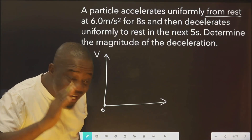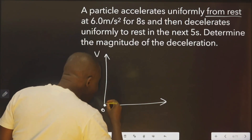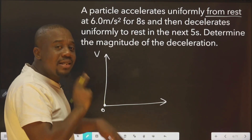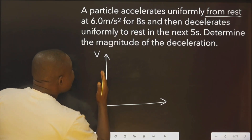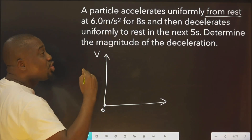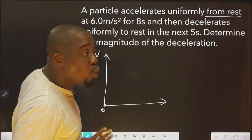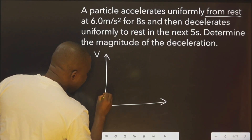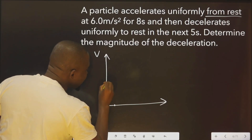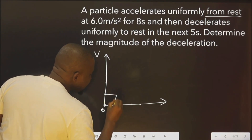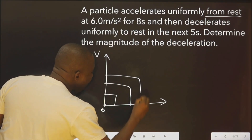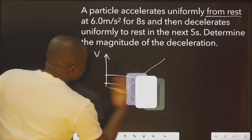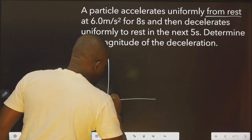Uniform acceleration means it was going like this — that is, as the velocity is increasing, time was also increasing. As you plot the graph, you can see the velocity is increasing. If you plot the graph, you have something like this, from rest.